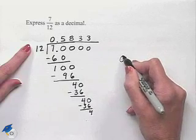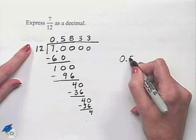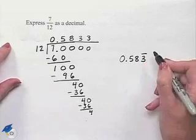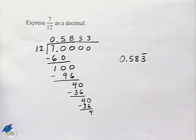So we're going to indicate that by saying that 7 twelfths could be written as a decimal by putting the 0.58, we put the 3, and we put a bar on top of the 3, indicating the continuation.